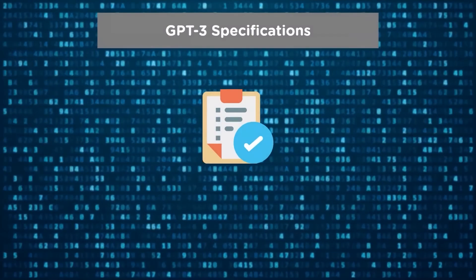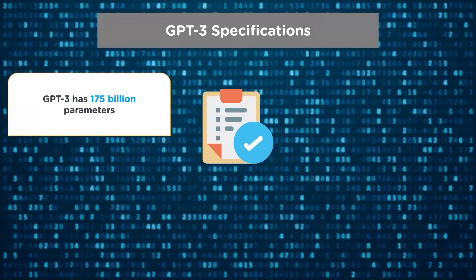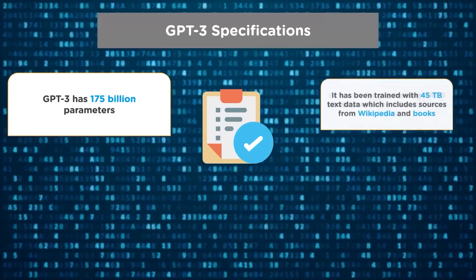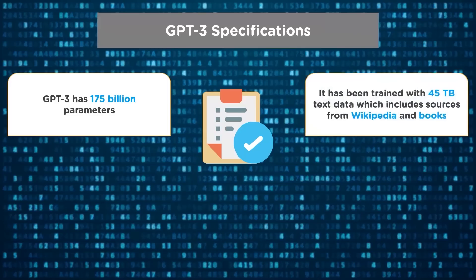Let's get started by looking at the different specifications of GPT-3. GPT-3 has been created using 175 billion parameters. None of the previous language models have used such a large number of parameters. It's been trained with 45 terabytes of text data, which includes sources from Wikipedia, Google Books, and coding tutorials.